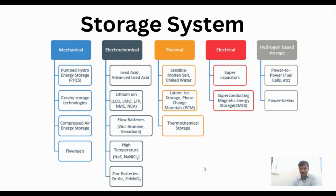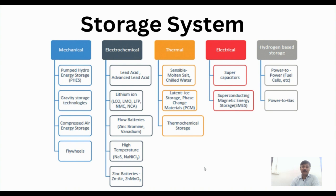The fifth is hydrogen-based storage, which includes fuel cell based, power-to-gas, and compressed hydrogen systems. These are the various storage systems used for different applications. Some of these are used in electric vehicles, and by research we can incorporate more of them into electric vehicles in the future.